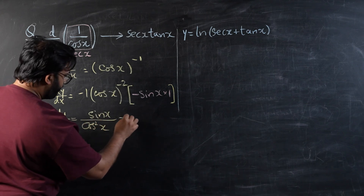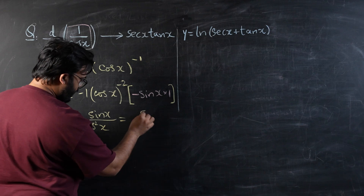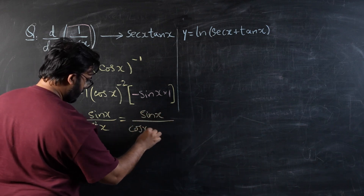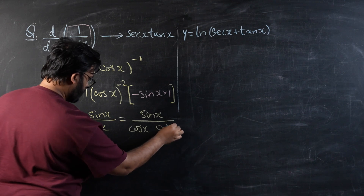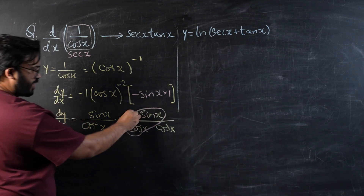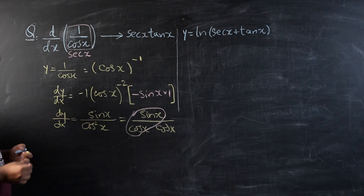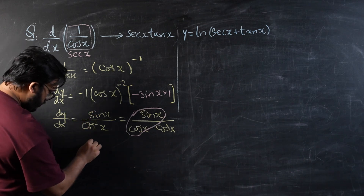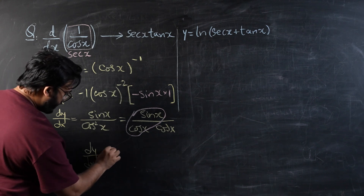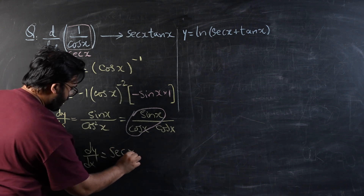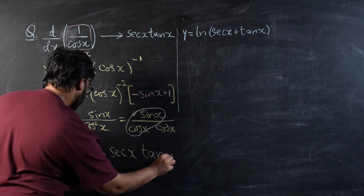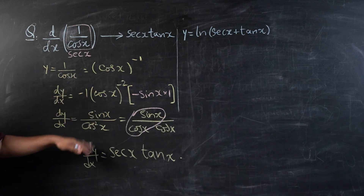I can write sin x over cos² x as sin x over cos x times cos x. We can visualize that sin x over cos x becomes tan x, and 1 over cos x becomes sec x. So dy/dx can be shown as sec x tan x. That completes the first section.